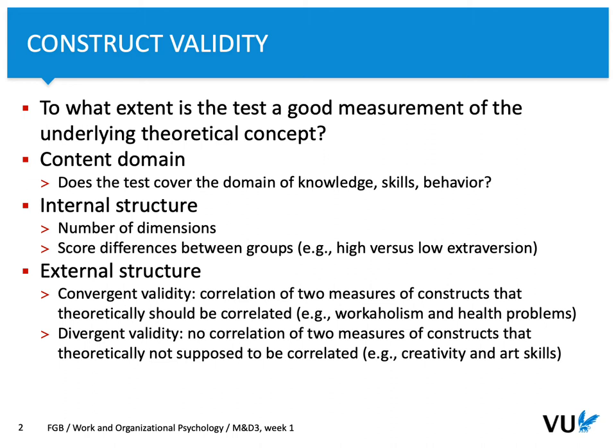Similarly for divergent validity, but in this case it's a validity focused on no or little correlation between constructs. So if you would like to assess divergent validity of a specific measure, you would use a questionnaire that should not correlate with your main measure. For example, if you test the validity of a creativity test, you would predict that creativity is something different from just art skills. If you correlate scores in this test with art skills grades and the theory is true, then you would identify low to zero correlations.